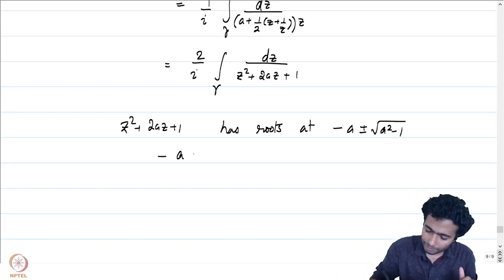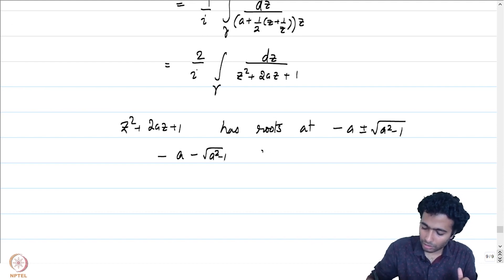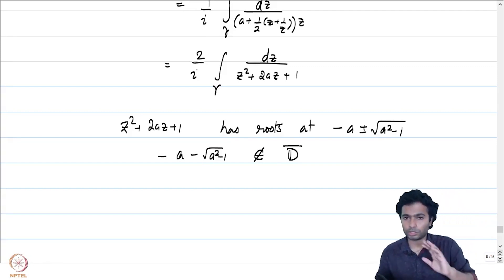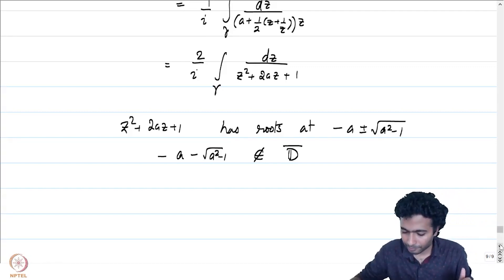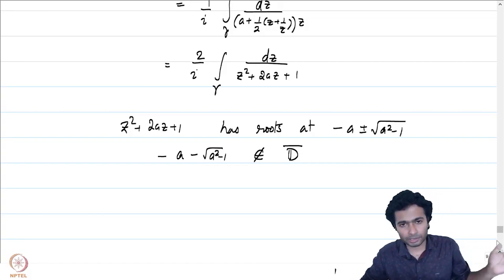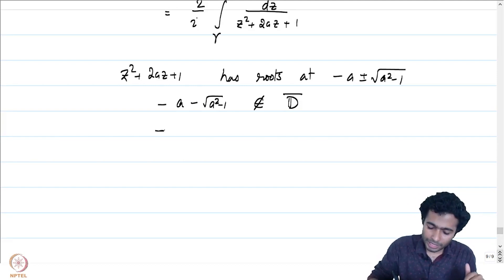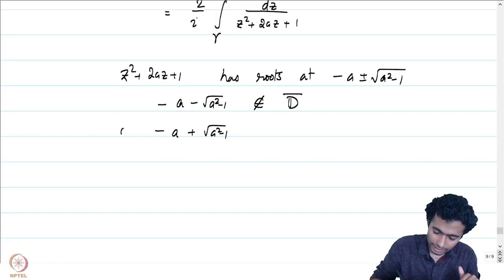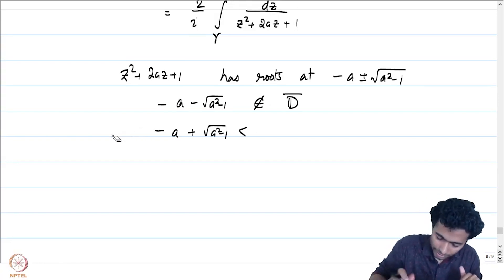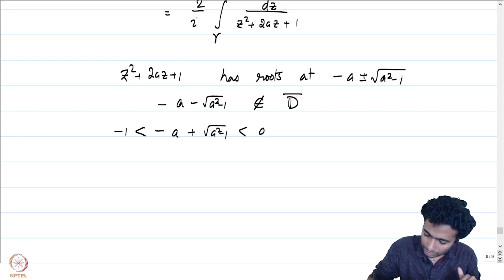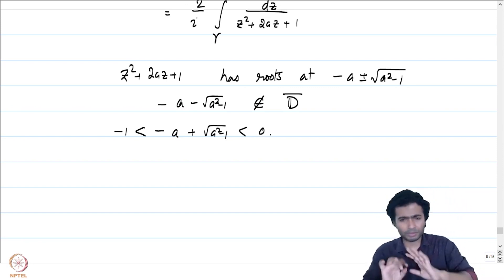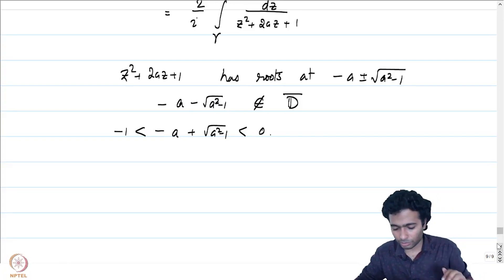Notice that −a − √(a²−1) does not belong to the closure of the unit disk, because a > 1 implies −a − √(a²−1) < −1, so its absolute value is certainly greater than 1. And −a + √(a²−1) lies between −1 and 0 — simple checks confirm this.